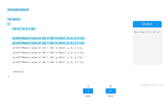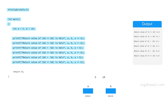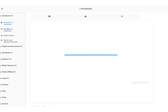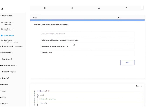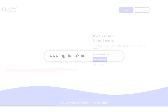Similarly, the next statement will print: 'return value of 5 != 10 is 1'. The next function will print: 'return value of 5 < 10 is 1' since 5 is less than 10. The next will print: 'return value of 5 > 10 is 0' since 5 is not greater than 10. Finally, the last function will print: 'return value of 5 >= 10 is 0' since 5 is not greater than 10 and not equal to 10.